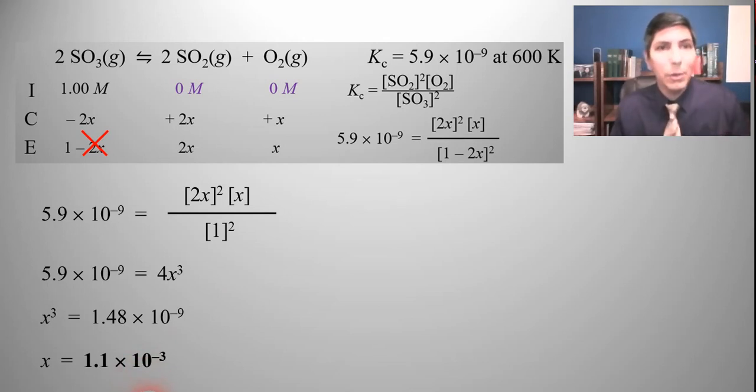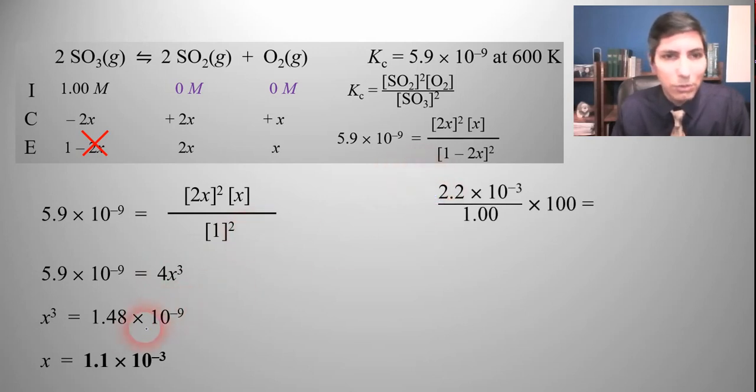Now I do need to go back in and just double check to make sure that 2x really is very very small or negligible when compared to what it's being subtracted from. So I'm going to calculate the percentage. 2x would be 2.2 times 10 to the minus third divided by one and change it to a percent. It's only 0.22 percent. So yeah it is safe to say that it was very negligible. So I just saved myself from having to do a cubic equation and all that stuff.